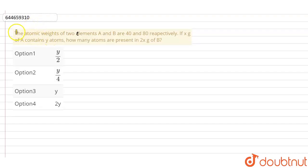The question is: the atomic weights of two elements A and B are 40 and 80 respectively. If x grams of A contains y atoms, how many atoms are present in 2x grams of B? The options are: y/2, y/4, y, or 2y.